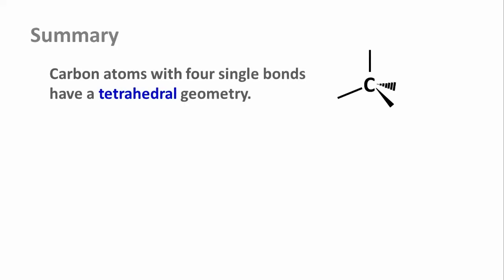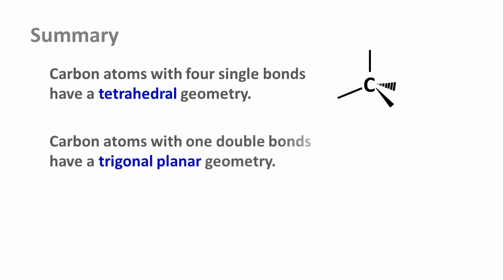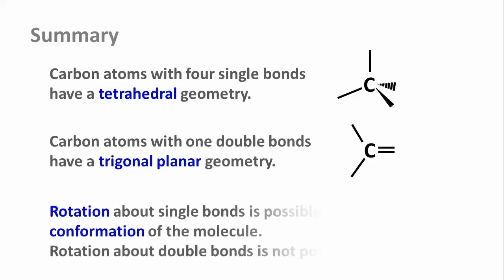So let's summarize, carbon atoms with four single bonds have a tetrahedral geometry. Those with one double bond have a trigonal planar geometry. It is possible to rotate parts of a molecule about a single bond, and we call this a conformational change, but rotation about a double bond is not possible.